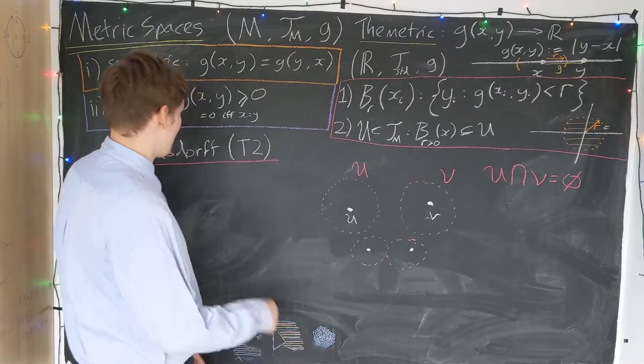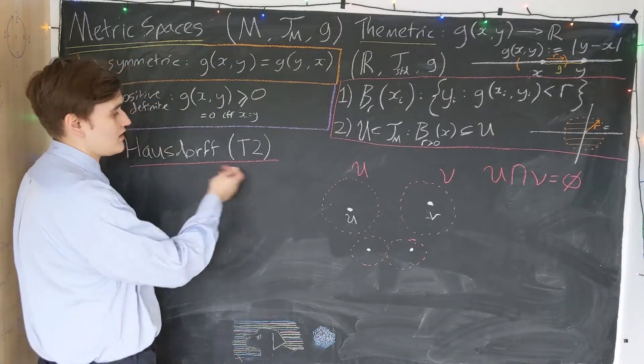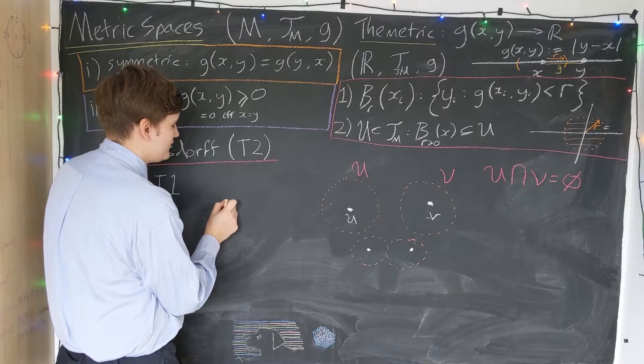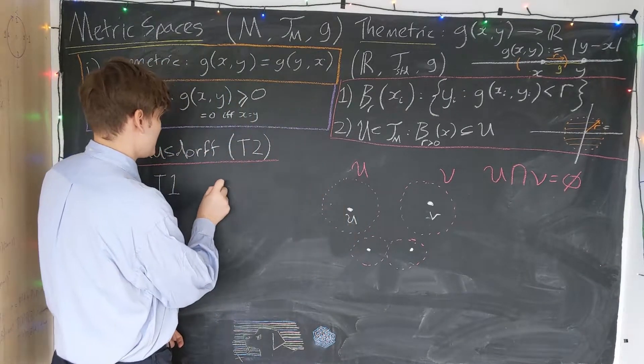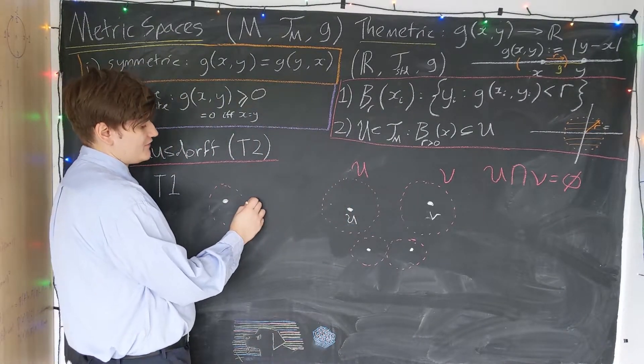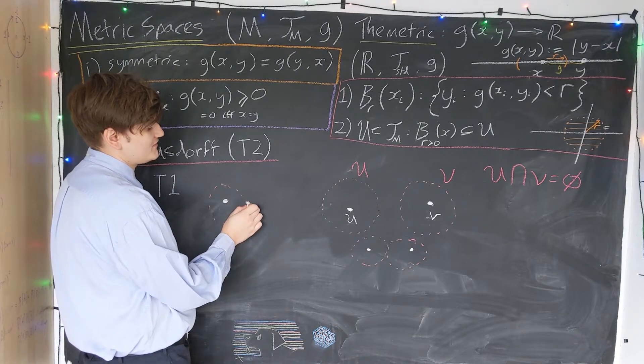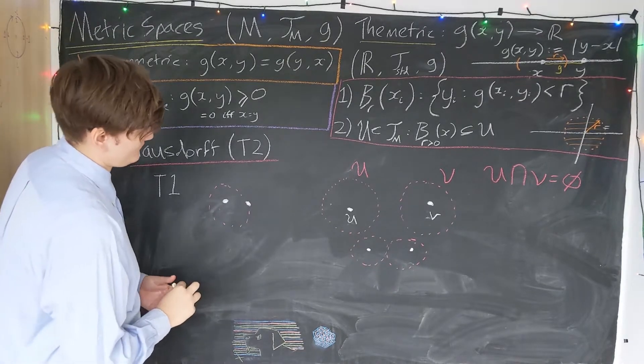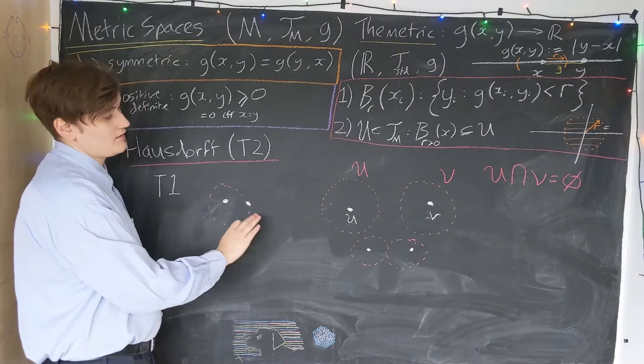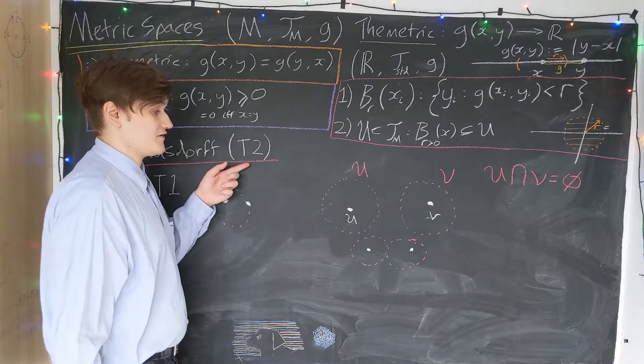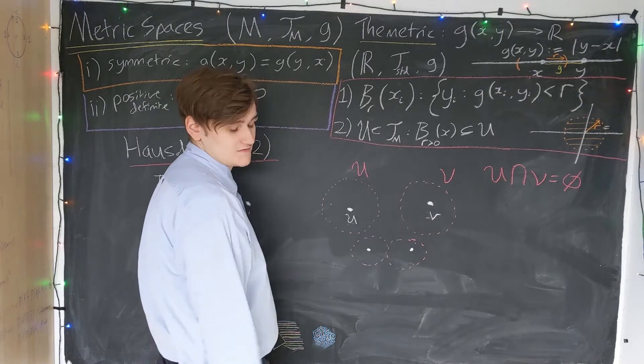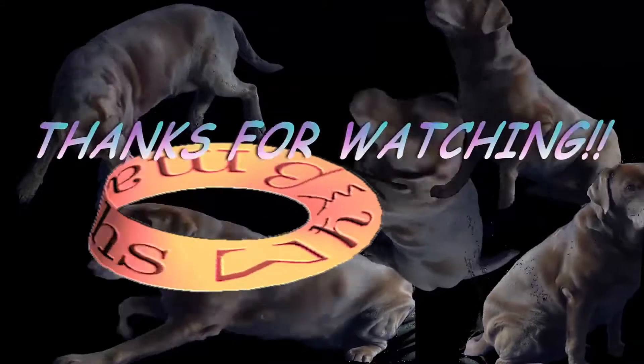I'll just briefly mention Hausdorff being T2. There are other classes that we could have. We could consider T1 space, which states that if you consider a point, you construct the open neighborhood around that point, the open set. You're now allowed to have the second point lie on the boundary of this open set. So this is a T1 space, turns out to have completely different properties entirely. We're just going to focus on T2, Hausdorff, where every point can be separated by these open balls.